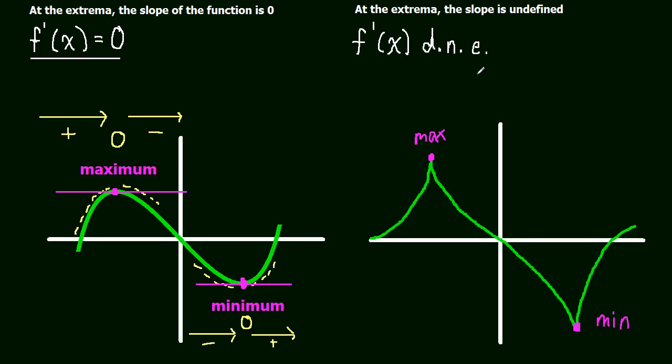These are the two ways in which you can have a maximum or a minimum. Either the derivative is going to be zero, or the derivative will not exist. In the next video, we're going to look at some specific examples. This is all very general, but hopefully this is a good introduction, and it helps you think about these maximum and minimum points in terms of the derivative, in terms of slope.